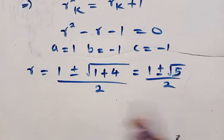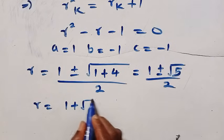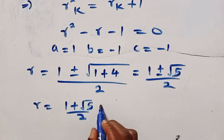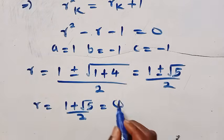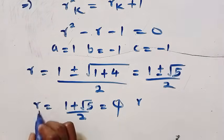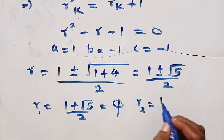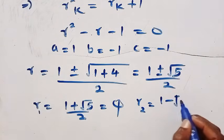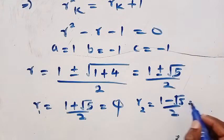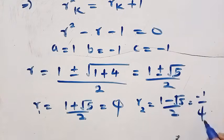With these two roots: r₁ = (1 + √5) / 2, which is the golden ratio, and r₂ = (1 - √5) / 2, which is the negative reciprocal of the golden ratio, sometimes written as -1/φ.